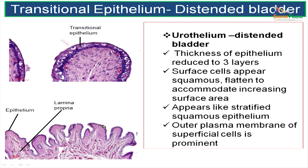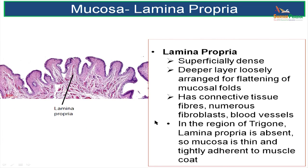The outer plasma membrane covering the superficial cells is very prominent. Next to the epithelium is a lamina propria — the deeper layer is densely arranged, while the lower layer is loosely arranged. This arrangement is for flattening the mucosal folds.